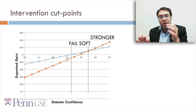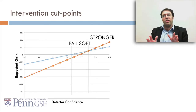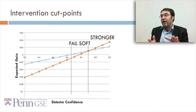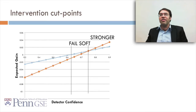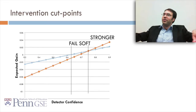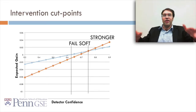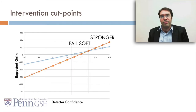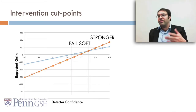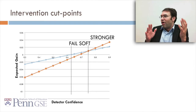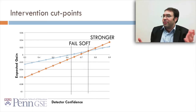By doing this type of cost-benefit analysis, you get an idea of where you want to apply interventions, and it isn't always just at 50%. There's this idea that 50% is where you're right, but in fact you should look at the actual cost and benefit of an intervention when you decide when to use it. 50% is often not the right place to actually make a decision.